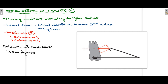The fourth method is distalization of molars. As the name suggests, the molars are driven in a distal direction to gain space. The ideal time to perform distalization is during the mixed dentition phase and before the eruption of the second permanent molar. There are two approaches: extra-oral and intra-oral.